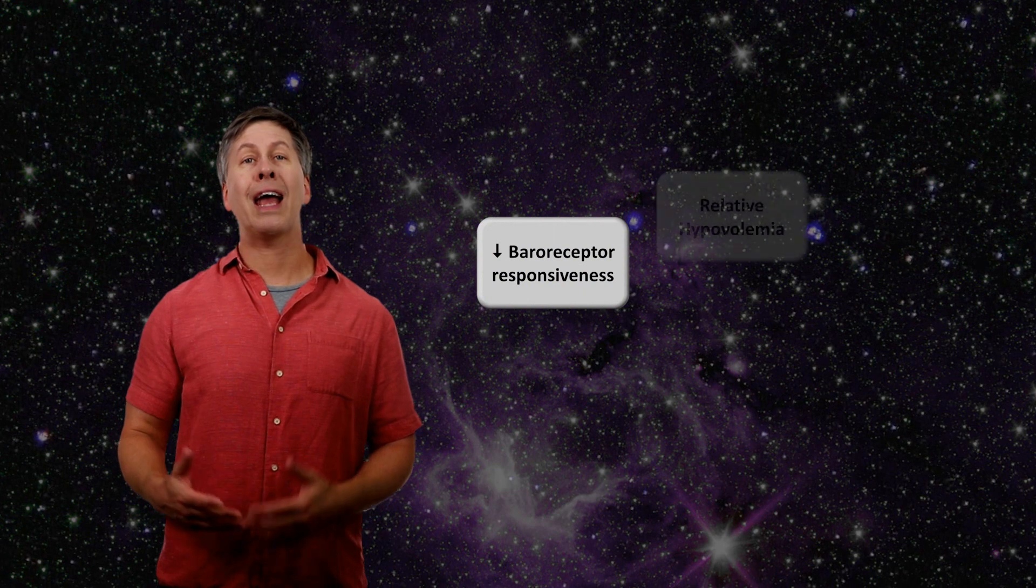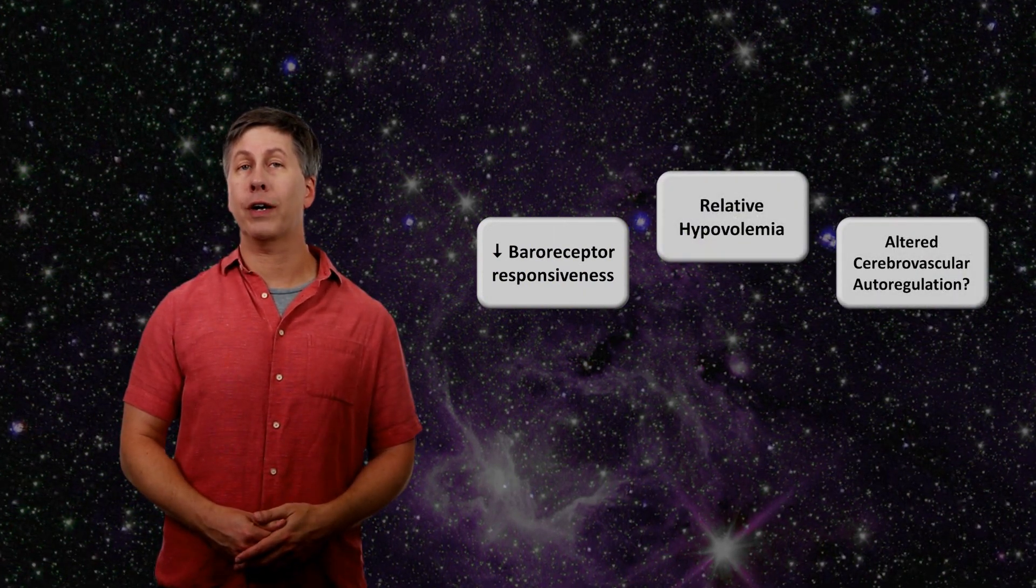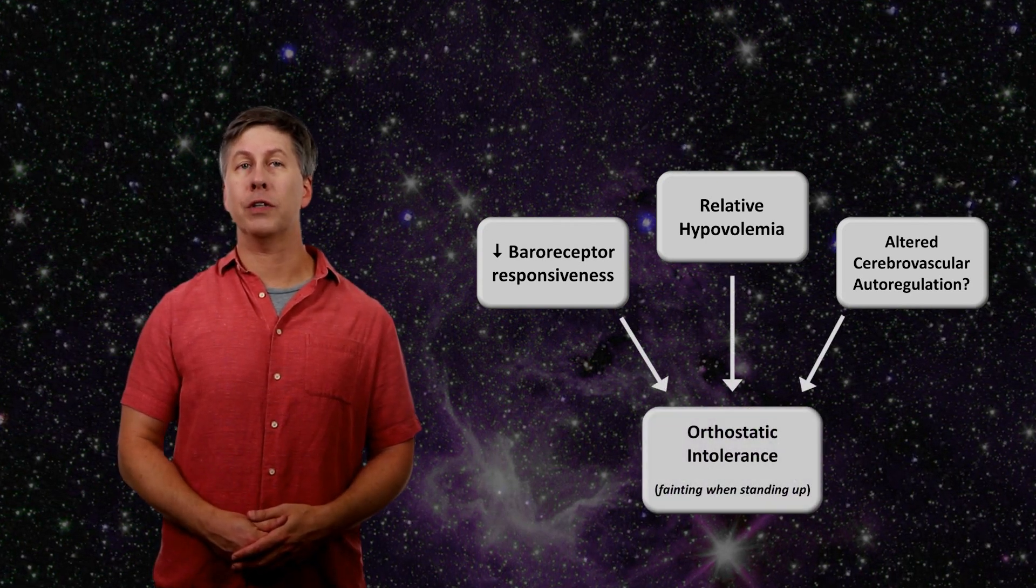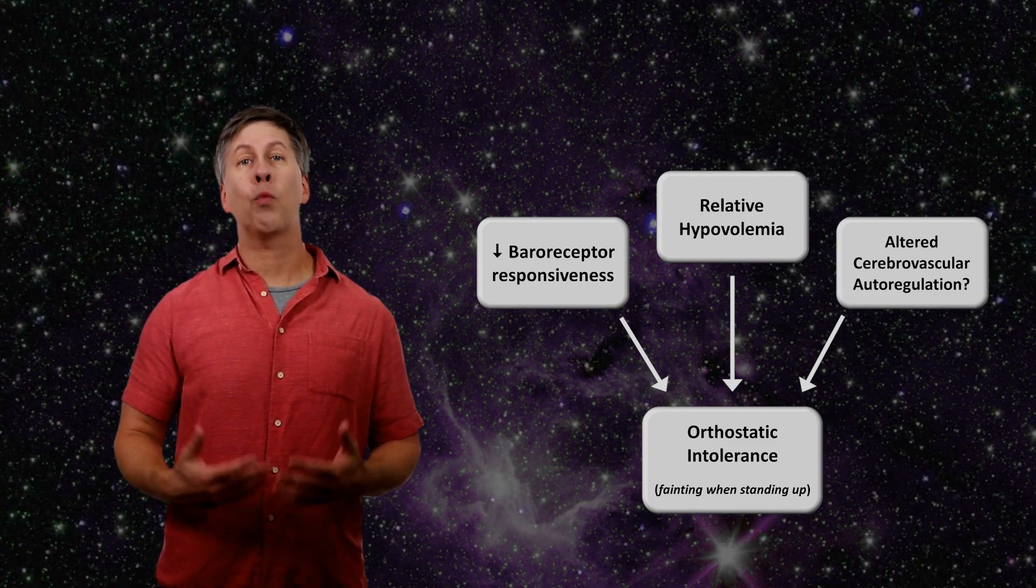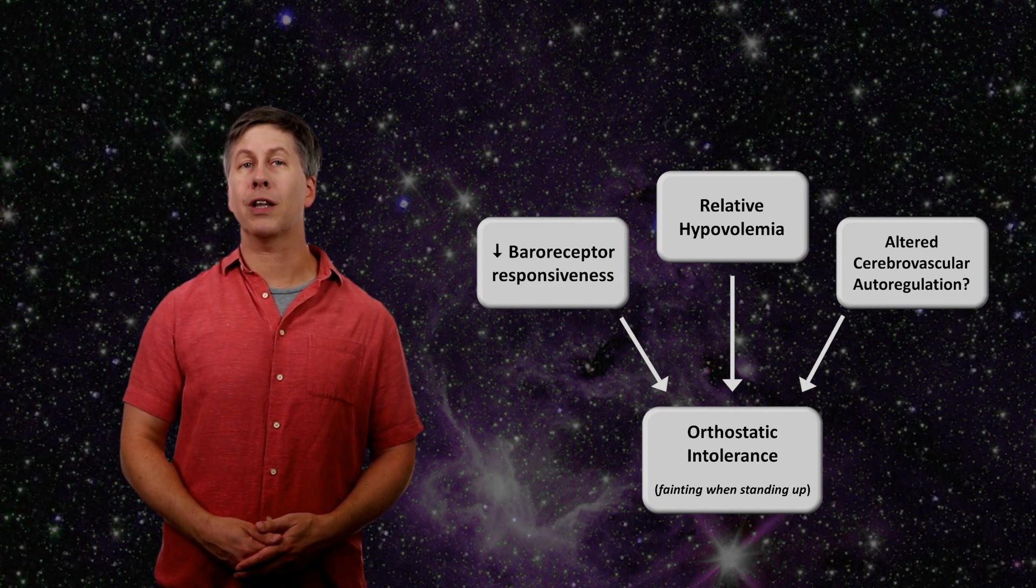Another response to microgravity is a reversible decline in baroreceptor responsiveness to positional changes in blood pressure, which is that reflex that prevents you from fainting every time you stand up. The combination of decreased baroreceptor function and relative hypovolemia, with a possible contribution from altered cerebrovascular autoregulation, predictably leads to something called orthostatic intolerance, which astronauts experience upon returning to Earth. They get light headed when walking around because their body has temporarily lost the ability to respond to blood pooling in the legs.